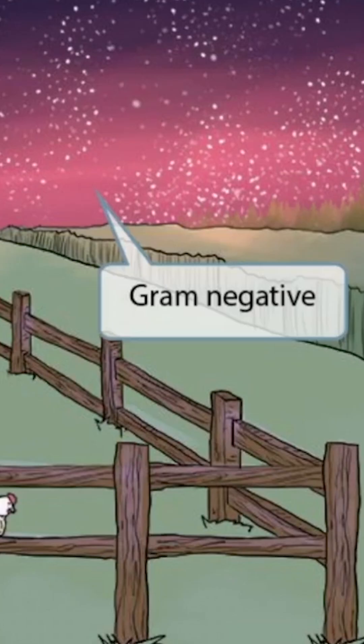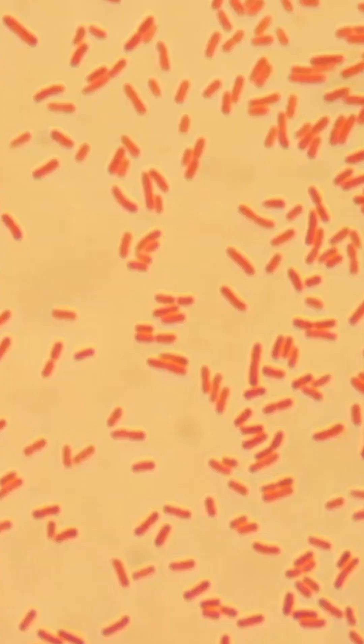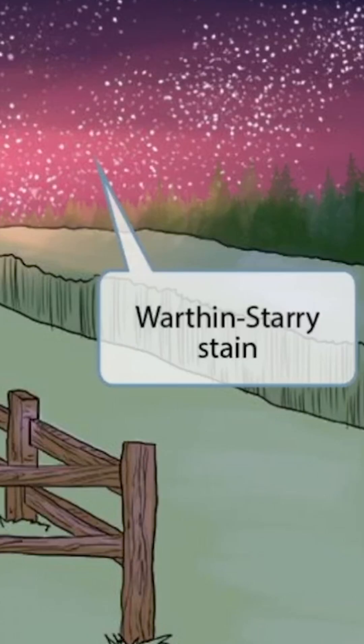Notice that we've made the sky look pink, which is to help you remember that this is a gram-negative organism. This is a gram stain of gram-negative rods — technically E. coli — but the morphology of Bartonella henselae is very similar. The organism appears pink and they are rod-shaped.